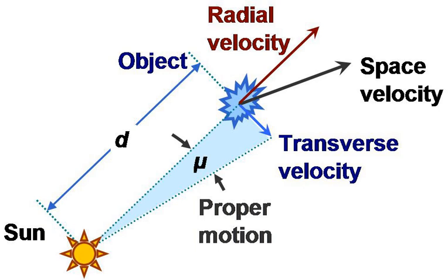Suppose an object moves from coordinates alpha one, delta one to coordinates alpha two, delta two in a time delta t. The proper motions are given by mu alpha equals alpha two cosine delta minus alpha one over delta t,